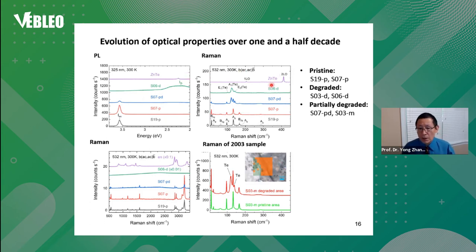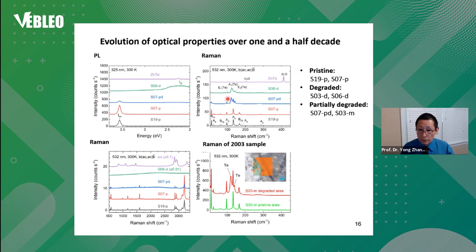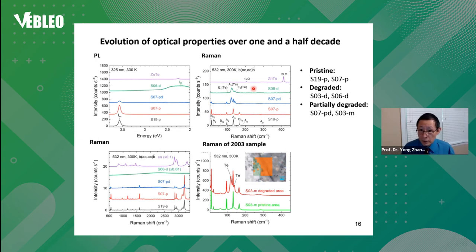Now let's compare the Raman spectra. For the pristine new sample, you see sharp Raman modes starting from around 12 wavenumbers. Between the 2007 and 2019 samples there is no difference. In the partially degraded one, you start to see two side bands and the hybrid modes are also weakened — a sign of degradation. These two side-band modes are telluride-related peaks. In the severely degraded sample, the hybrid peaks are totally gone.